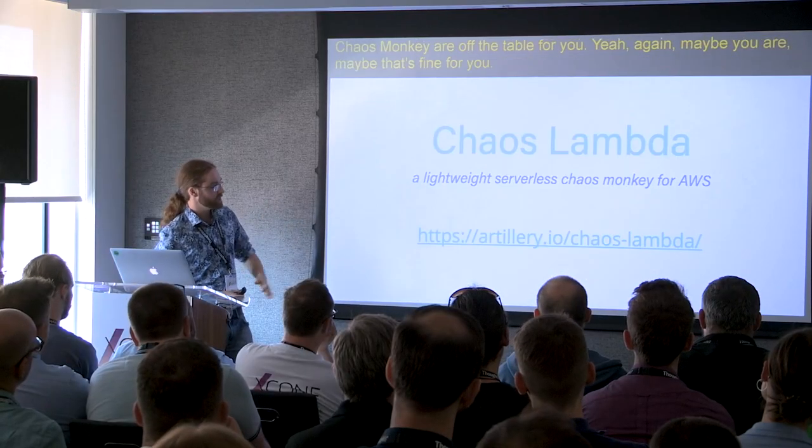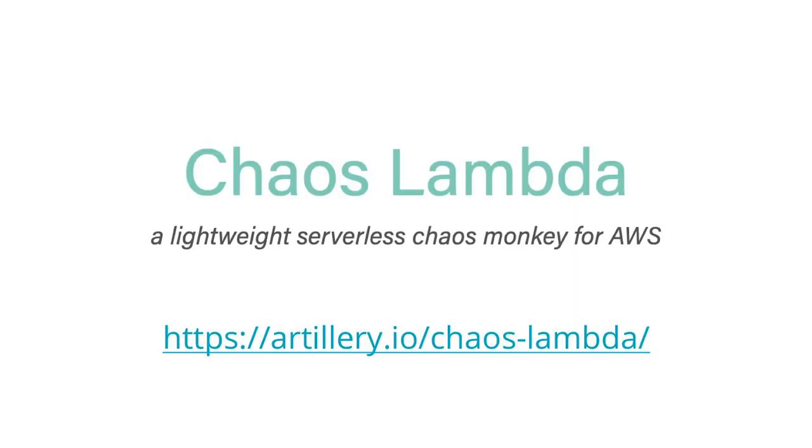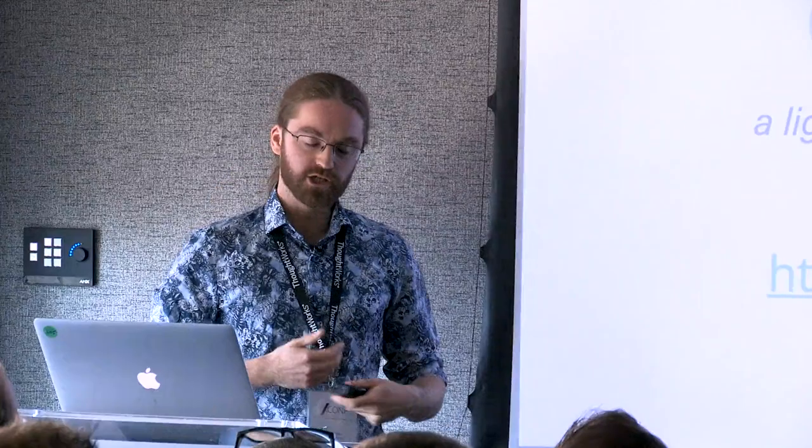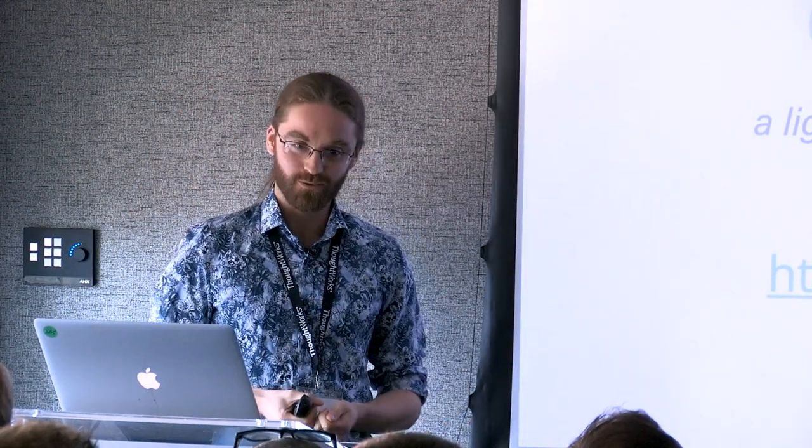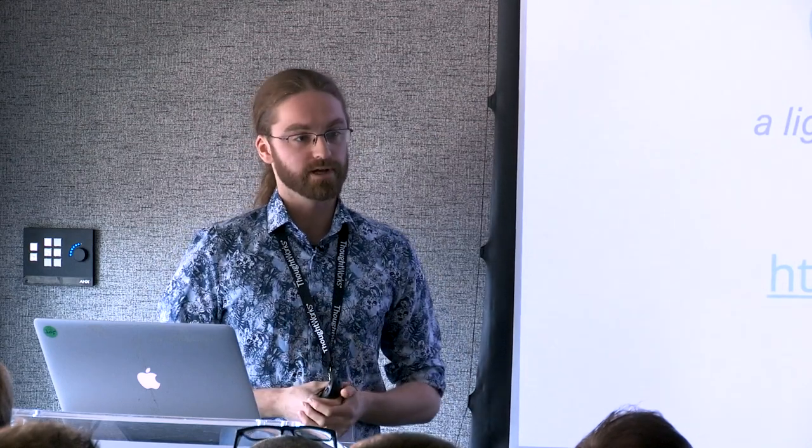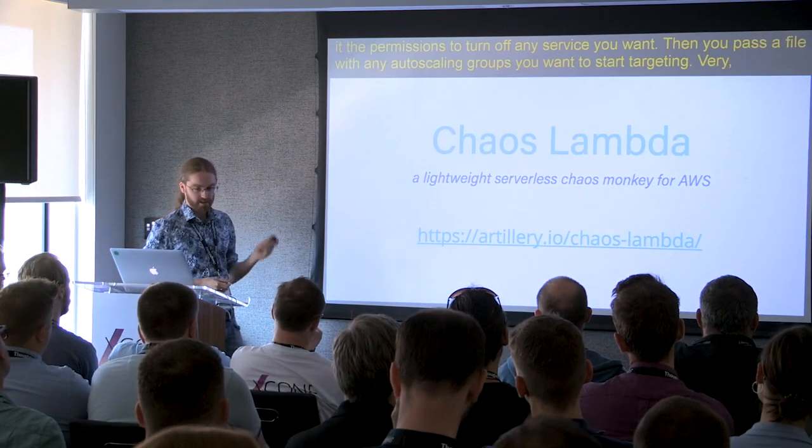Personally, if you're in AWS, I would probably recommend you get started here from the lovely people at artillery.io. It's a very lightweight Lambda. The pitch is you can get started with chaos engineering in about 15 minutes. By default, it does nothing. You just need to give it the permissions to turn off any service it wants, and then you pass a JSON file with any auto-scaling groups you want to start targeting. Very lightweight way of getting started. Obviously a bit of a non-starter if you're not on AWS.